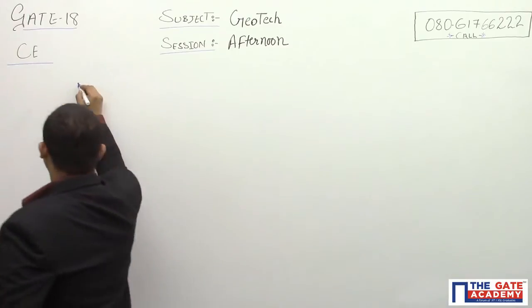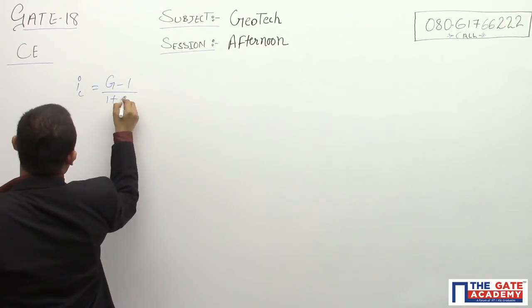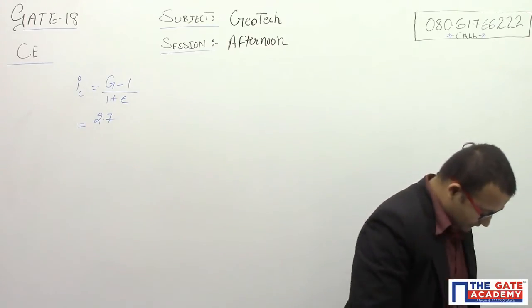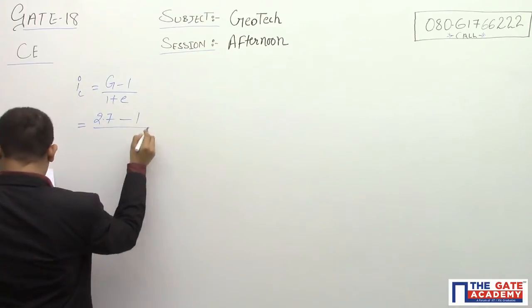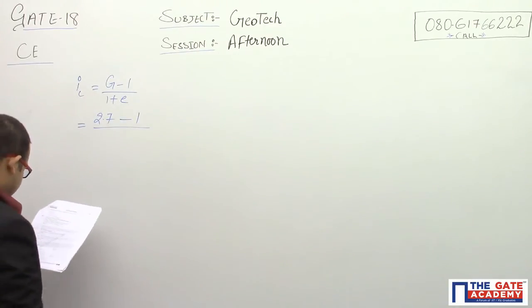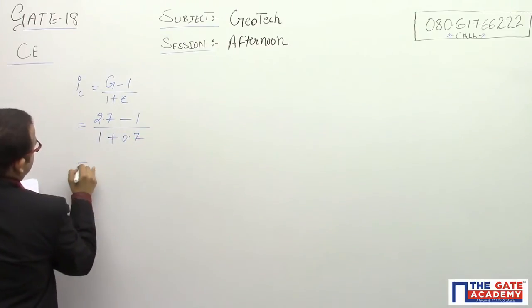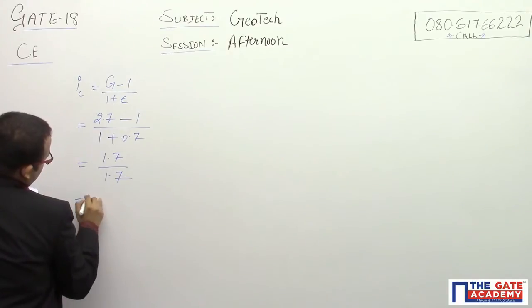Ic equals G minus 1 divided by 1 plus E. Specific gravity value is 2.7 minus 1 divided by void ratio 0.7, so 1 plus 0.7. This equals 1.7 divided by 1.7.